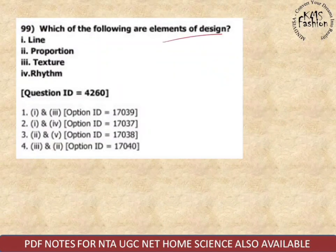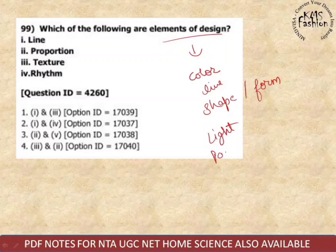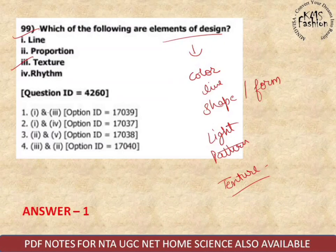Next: which of the following are elements of design? Elements of design include: color, line, shape (also called form), light, pattern, and texture. Line and texture are correct options. Eliminate options two and four — answer is first option.